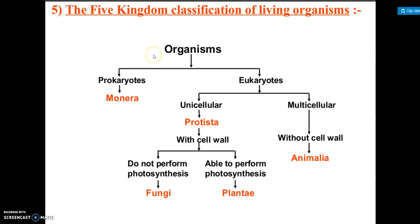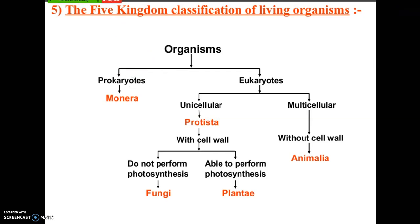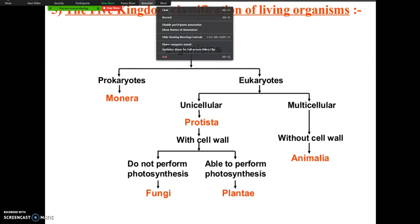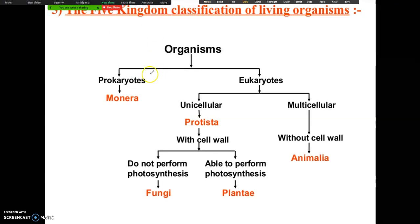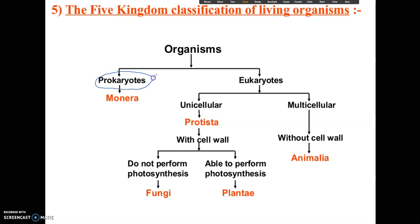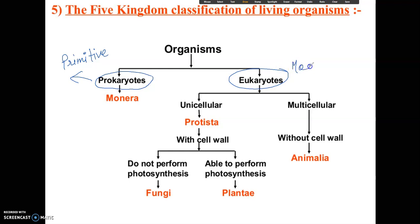All the living organisms are classified into two groups: prokaryotes and eukaryotes. Prokaryotes are primitive and their nucleus is not well defined — they are less advanced. Eukaryotes are most advanced and modern. Kingdom Monera falls under prokaryotes.